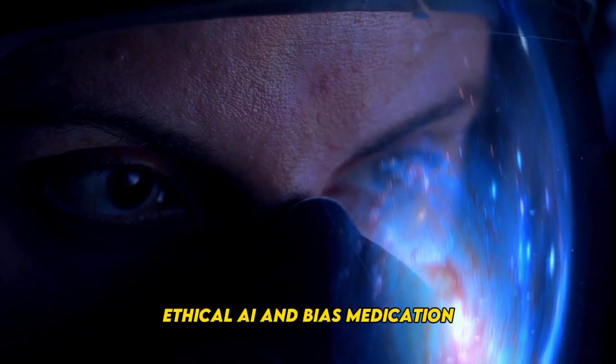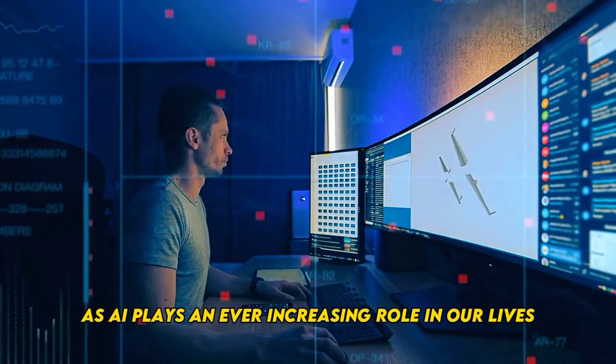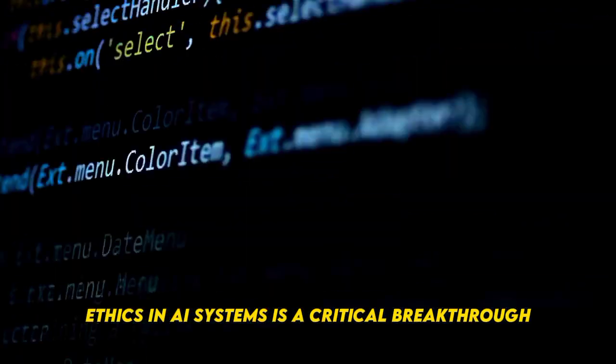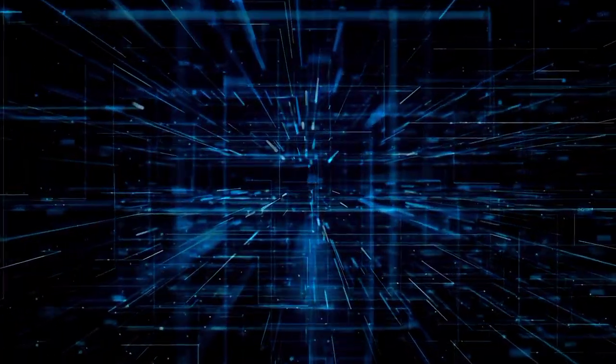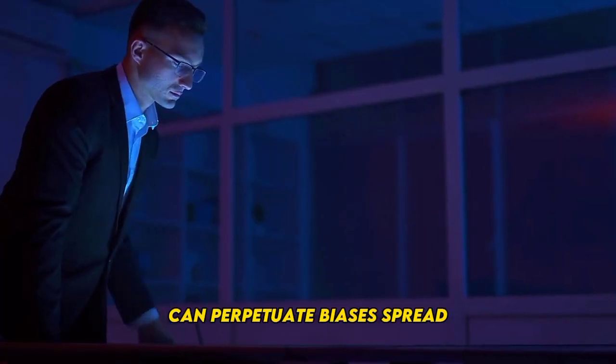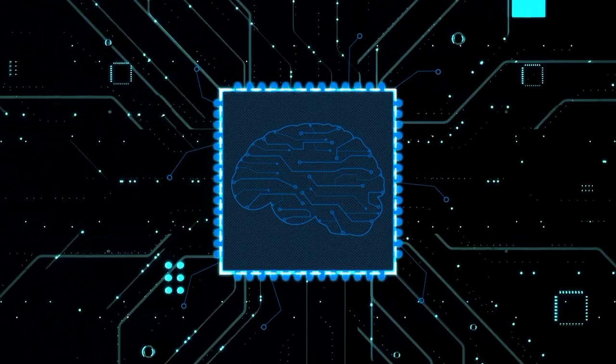Number 1: Ethical AI and Bias Mitigation. As AI plays an ever-increasing role in our lives, ensuring fairness and ethics in AI systems is a critical breakthrough. The ethical considerations surrounding AI have gained prominence as its applications have expanded. AI systems, if not designed and trained carefully, can perpetuate biases present in the data they learn from. This can lead to unfair and even discriminatory outcomes.